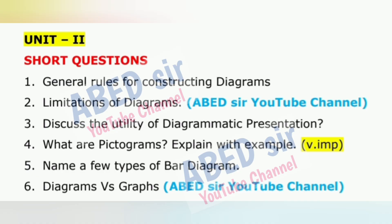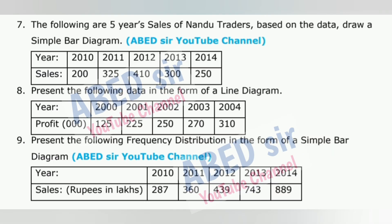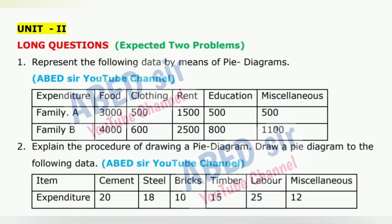Now, here are some smart writing tips to follow in the exam hall. First, read the question paper carefully and calmly. Do not write anything on the question paper except your hall ticket number. Begin your answers with the question you know best — this builds confidence and creates a good impression.